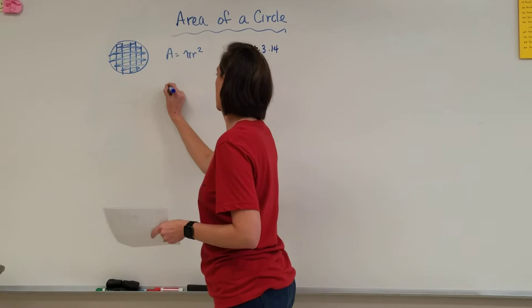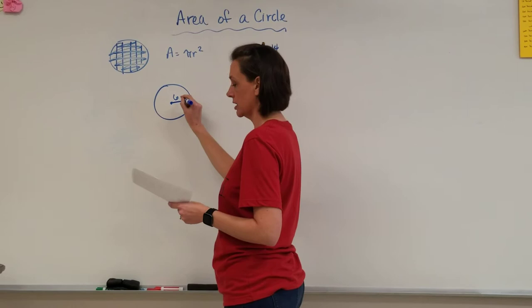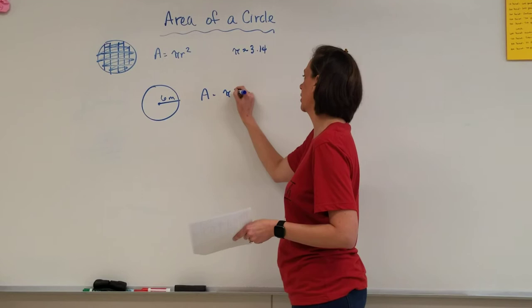So, if we start with this one example, if I have a radius of 6 meters, we take our formula - area equals pi r squared - and we plug in what we know.